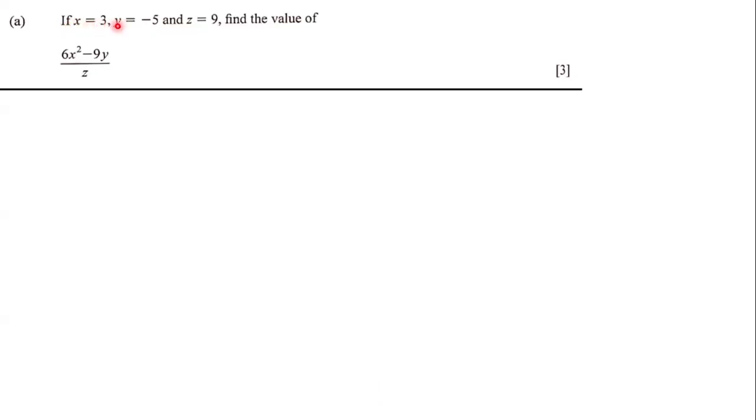If x is equal to 3, and y is equal to negative 5, and z is equal to 9, find the value of 6x squared minus 9y all over z.